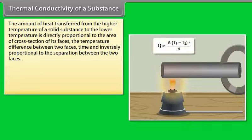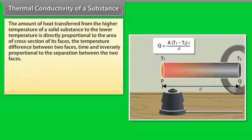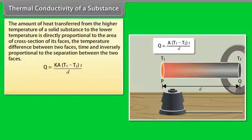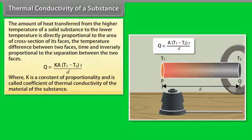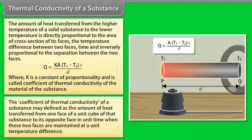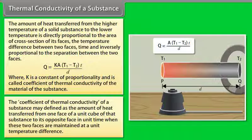Thermal conductivity: The amount of heat transferred is directly proportional to the cross-sectional area, the temperature difference between two faces, and time, and inversely proportional to the separation between the faces. This gives Q = KA(T1 − T2)t/d, where K is the coefficient of thermal conductivity. It is defined as the amount of heat transferred through a unit cube from one face to the opposite face per unit time when the faces are maintained at a unit temperature difference.